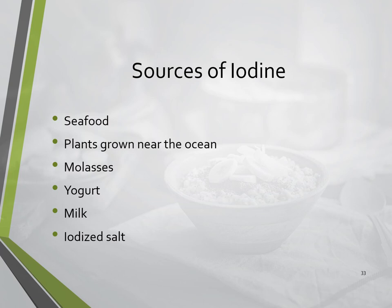Sources of iodine include seafood, plants grown near the ocean like algae, molasses, yogurt, milk, and iodized salt. The iodine content of meat and animal products depends on the iodine content of the feed given to animals. Not all table salt contains iodine, so it's worth checking your label. Iodine in salt will remain stable for many months if kept dry, in a cool place away from light, as UV rays from sunlight will degrade the iodine.